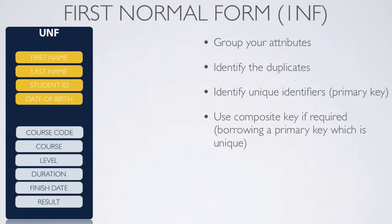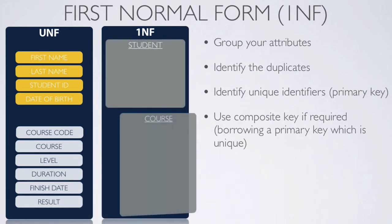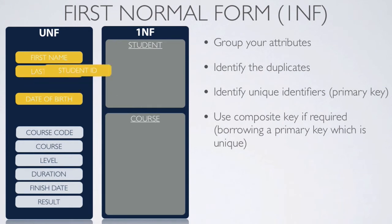The first step in getting to our first normal form is to split up the table so that we have the attributes which repeat and the attributes which don't repeat. We spoke about grouping the attributes into students and course entities, so we can create two tables — one for students and one for courses. From the un-normalized data, we can move across the module number, duration, and level, because they all repeat, over to the course table.